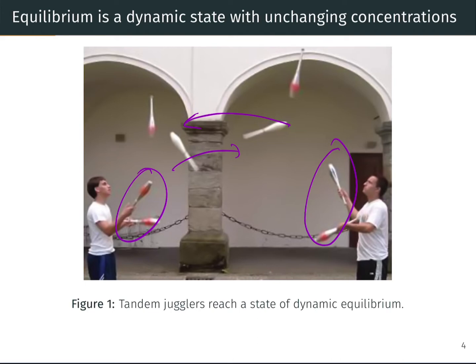This ensures that each individual juggler only has two pens at a given time. And more generally, the number of pens in each juggler's hands is not changing with time. This is a state of dynamic equilibrium, and exactly what molecules are doing in converting from reactants to products and products to reactants in a chemical system at equilibrium.